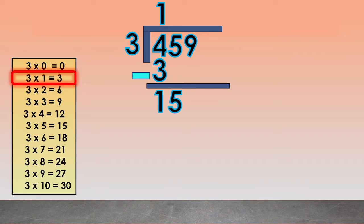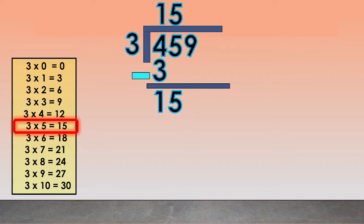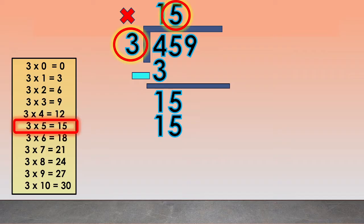We will use 3 times 5 equals 15. We write the 5 above the 5. Then we multiply 3 times 5 equals 15 and write 15 below the 15. Now subtract 15 minus 15 equals 0. Next, bring down the digit 9 in the dividend.